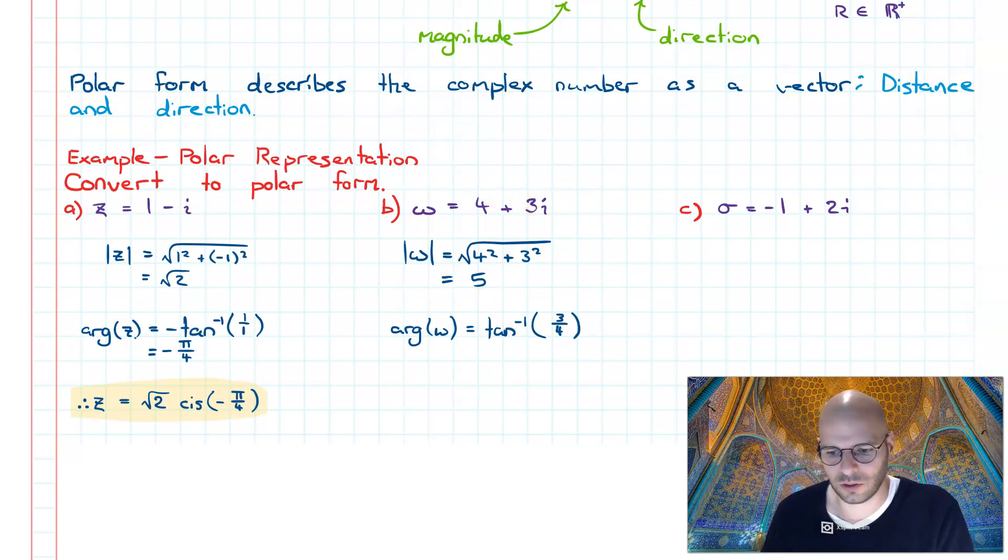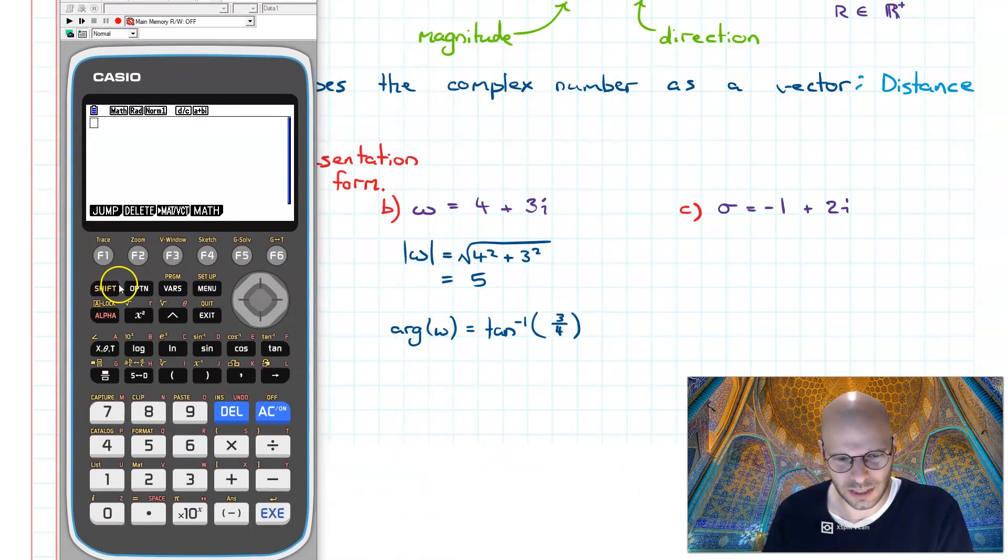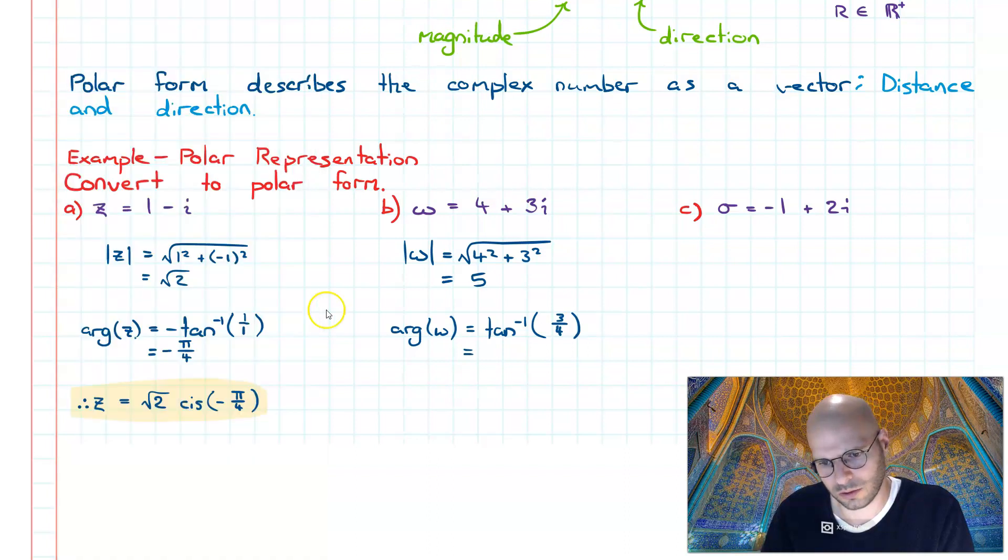Now I don't know this one off the top of my head, so what I need to do is employ my calculator. So I simply plug it in, just like that, and I say that my argument is 0.644. So therefore, omega can be represented in polar form as 5 cis 0.644.